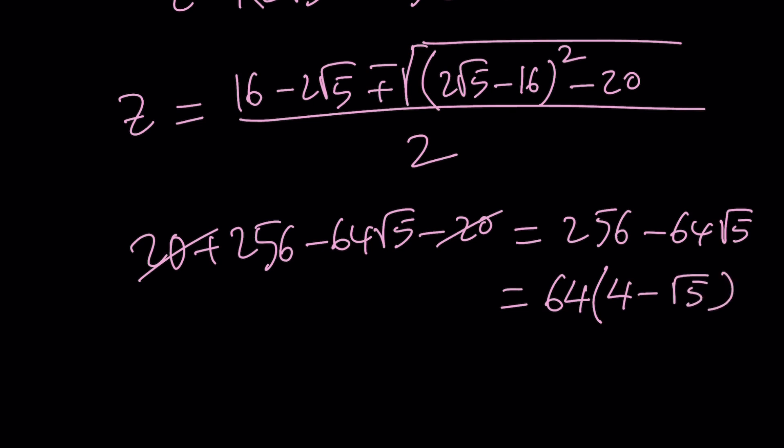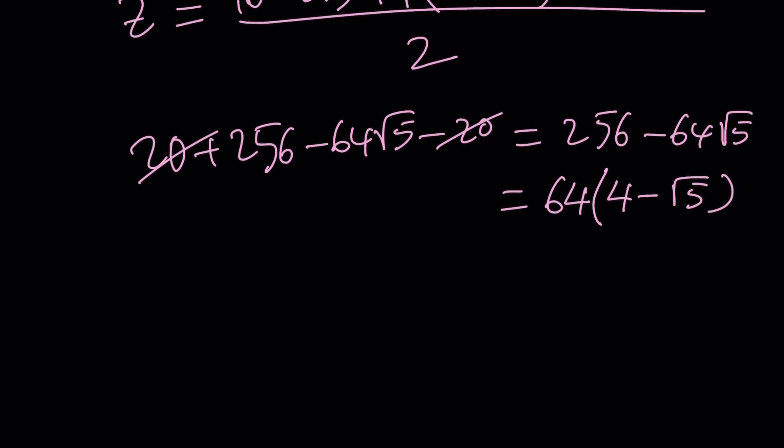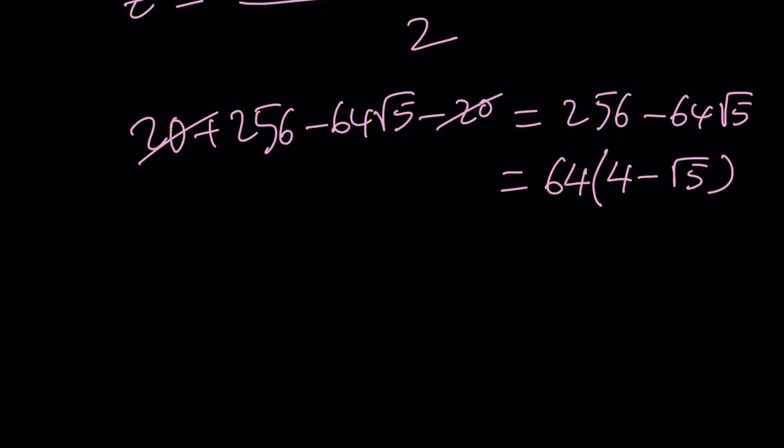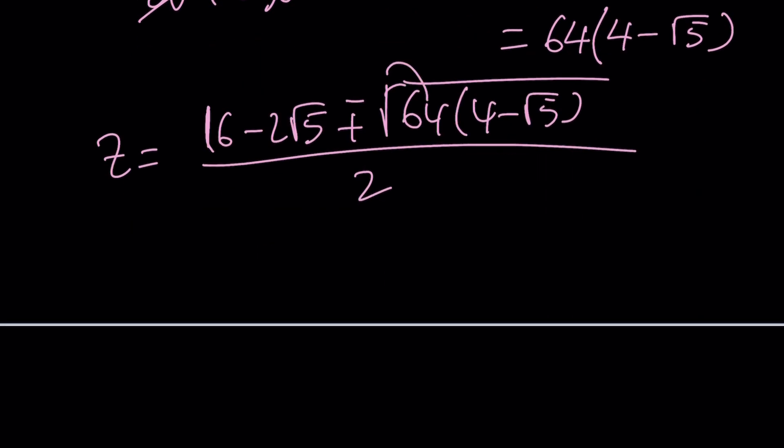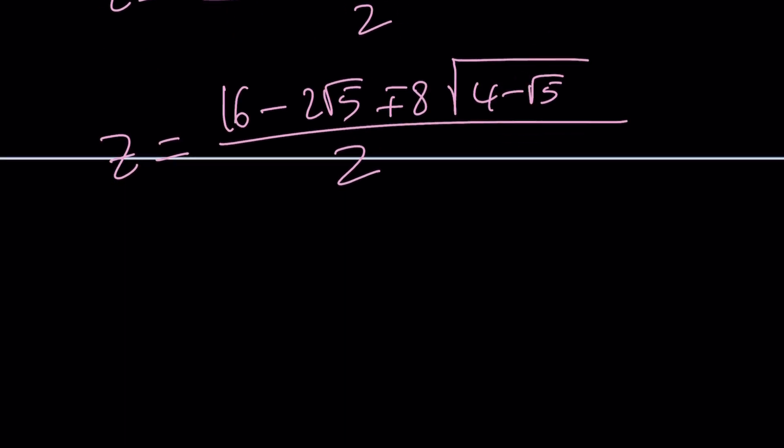Now, let's go ahead and square root that. z is going to be (16 - 2√5 ± √(64(4 - √5)))/2. And now 64, you can take it out as 8. It becomes √(4 - √5) and all of that is divided by 2. And then obviously everything can be divided by 2: 8 - √5 ± 4√(4 - √5).